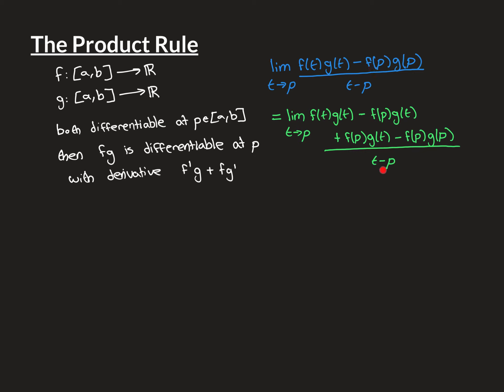You've still got the same denominator, and the numerator has just been expanded slightly. You've still got the two initial terms: f(t)g(t) is here, and minus f(p)g(p) is here. The two middle terms I've now added in are the exact same thing but one is the negative of the other — minus f(p)g(t) and plus f(p)g(t) — so we've just subtracted off and added back the same thing.